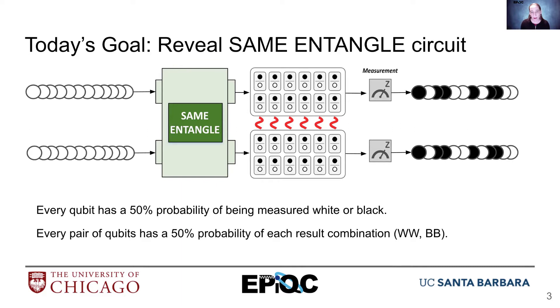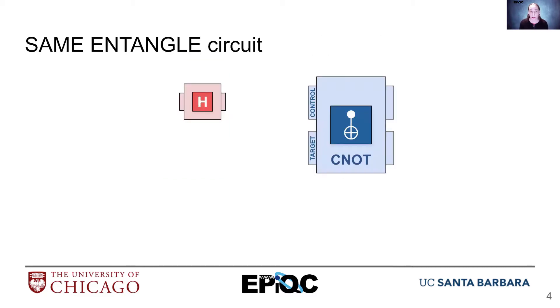Remember that measurement is the action that determines whether something is black or white. So let's see how this works.